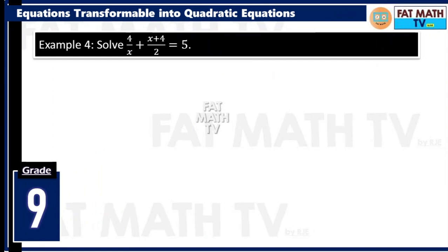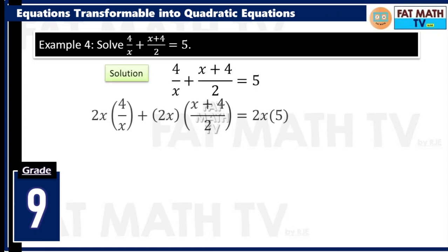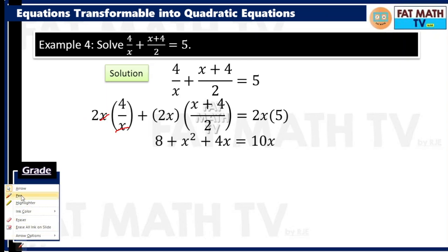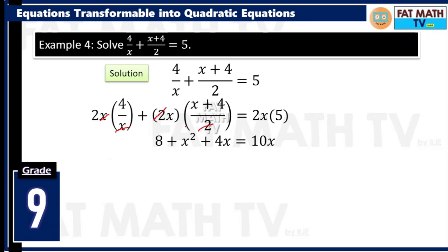Number 4: solve 4 over x plus x plus 4 over 2 equals 5. We have two denominators: x and 2. Their least common multiple is 2x, so multiply both sides by 2x. Multiply 4 over x by 2x — cancel x — you get 2 times 4, that's 8. Multiply x plus 4 over 2 by 2x — cancel 2 — you get x times x plus 4. Distribute x: x times x is x squared, x times 4 is 4x. On the right side, 2x times 5 is 10x.